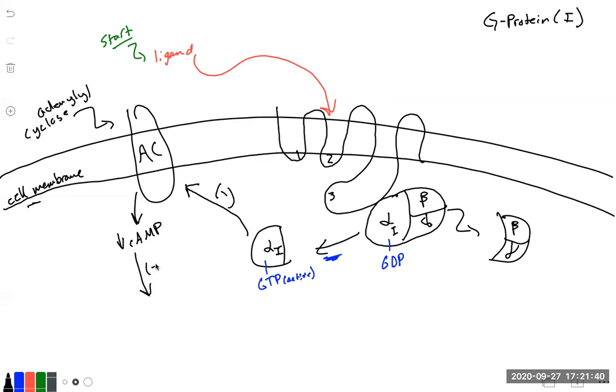That will also inhibit our protein kinase A. Well, if protein kinase A is inhibited, what does that mean? We have no protein phosphorylation.